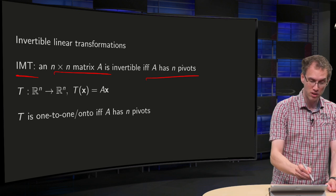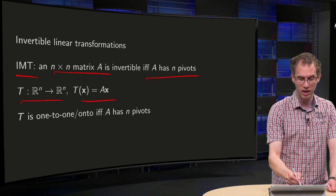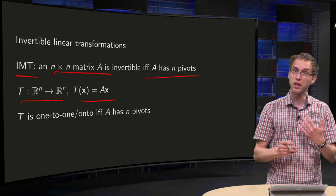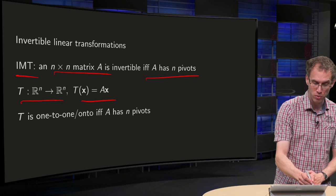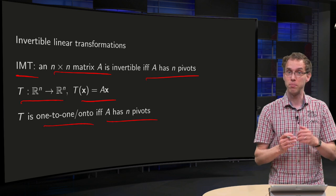And we know that transformations T from R^n to R^n, T(x) equals Ax, they were invertible if, sorry, they were 1-to-1 and onto if and only if the matrix A has n pivots.